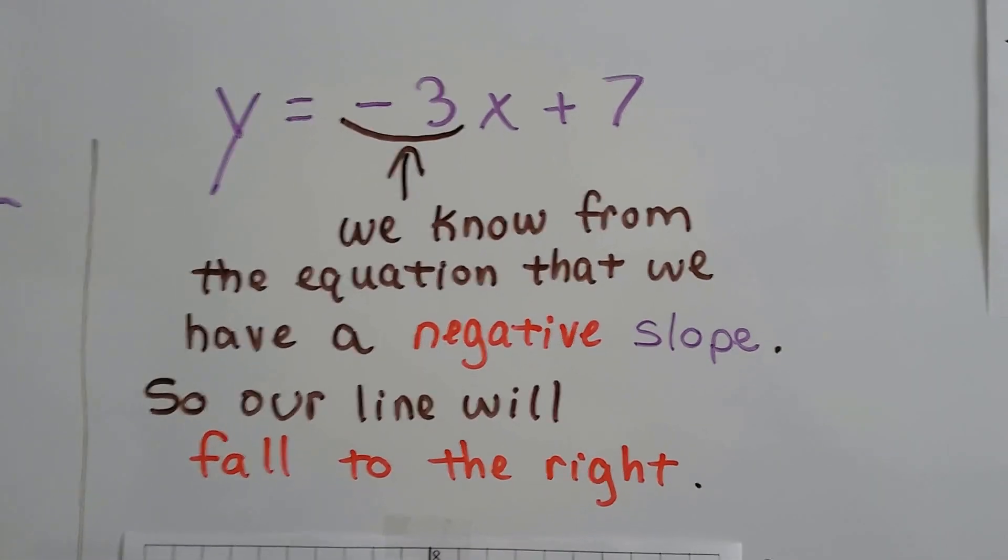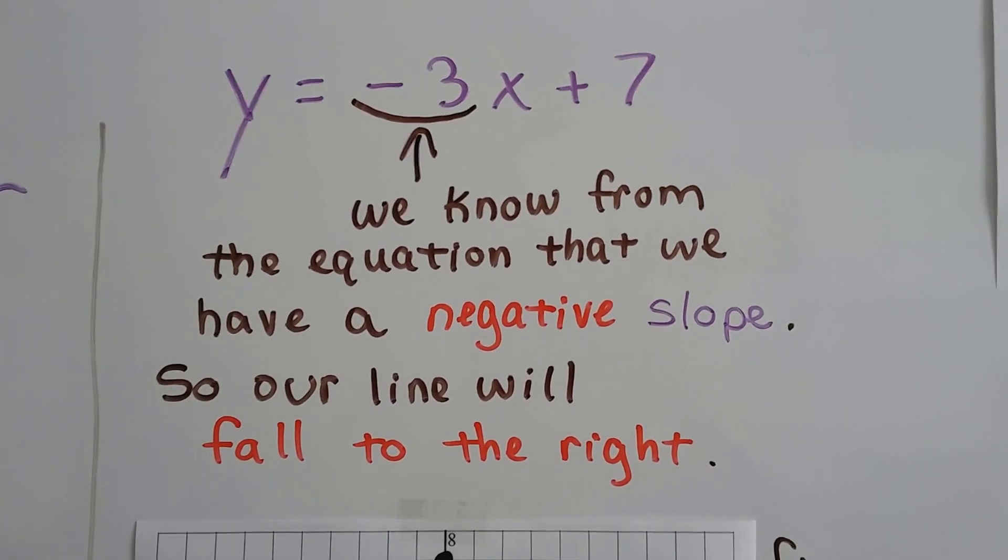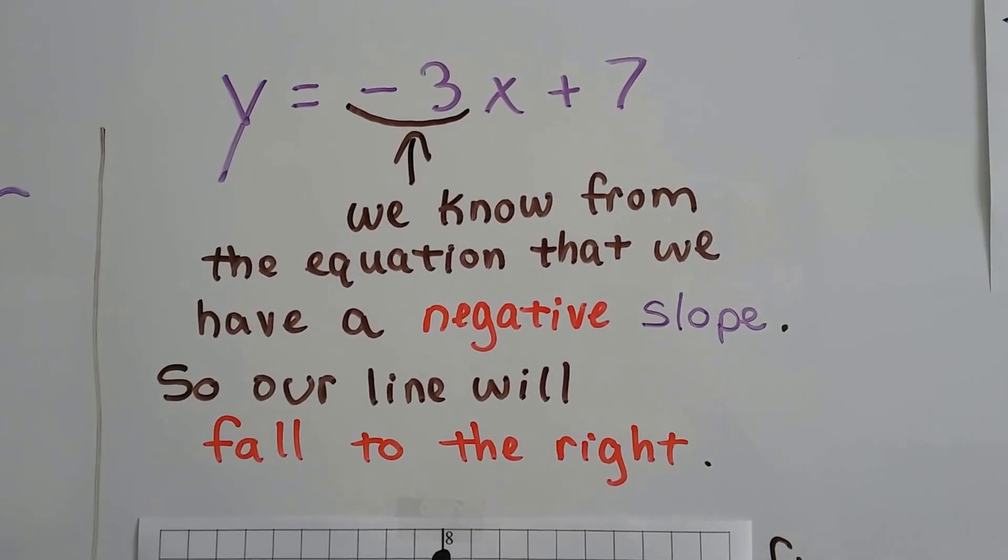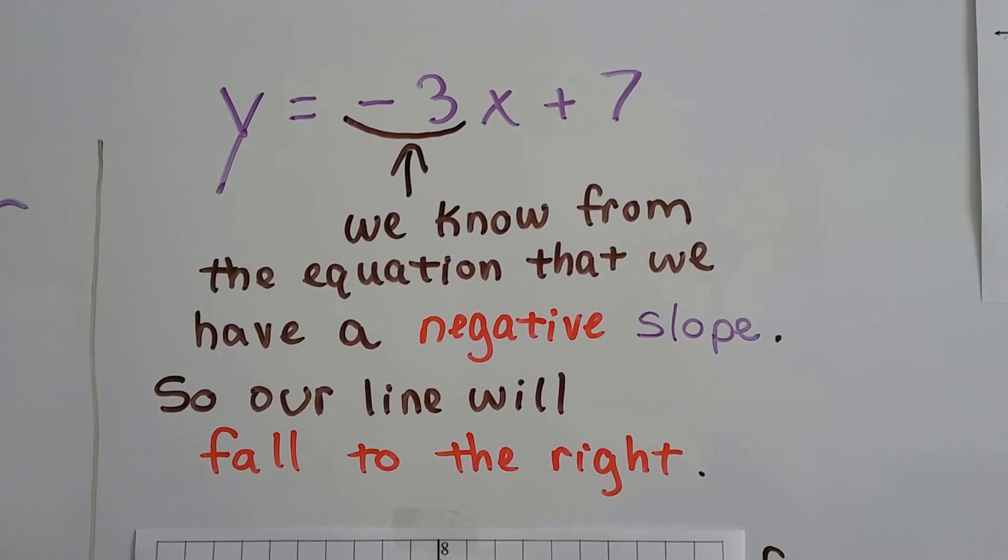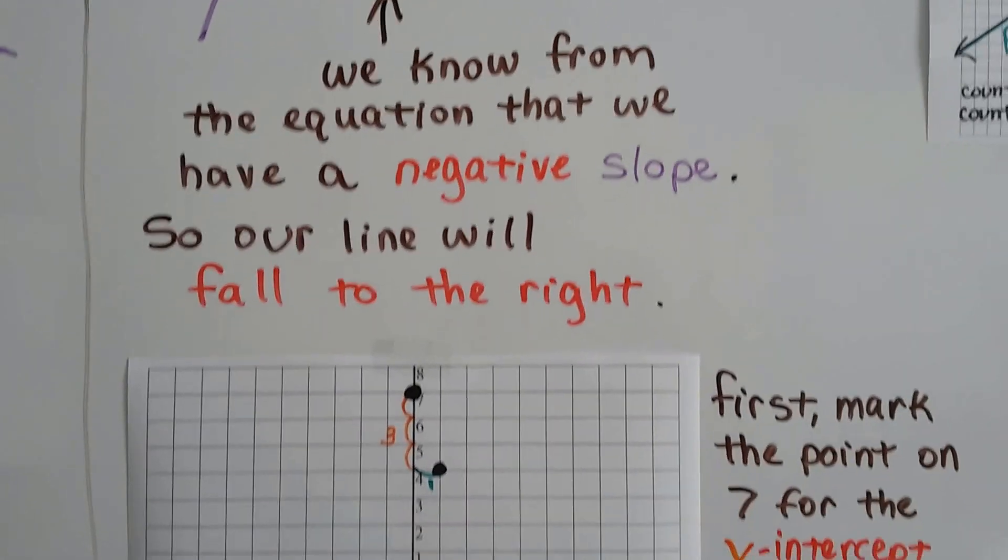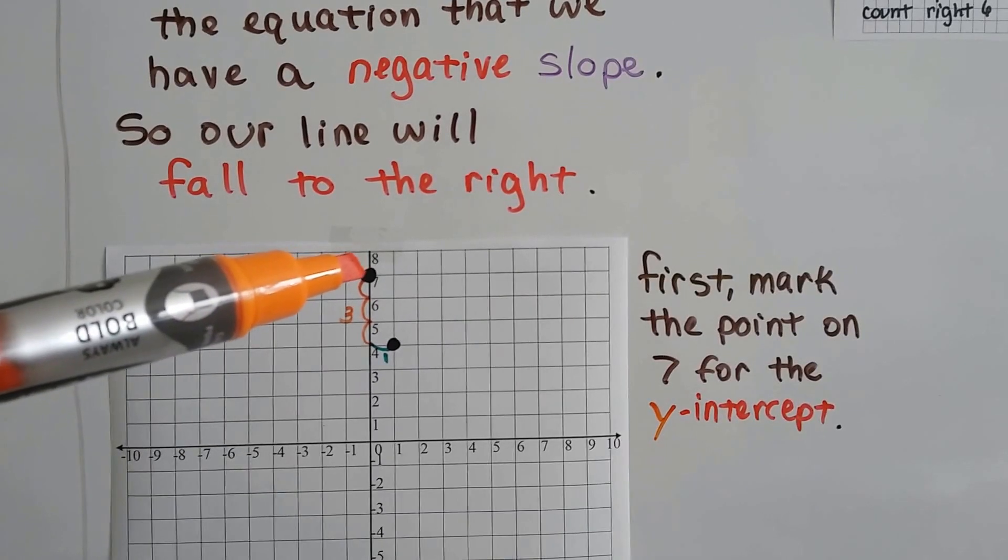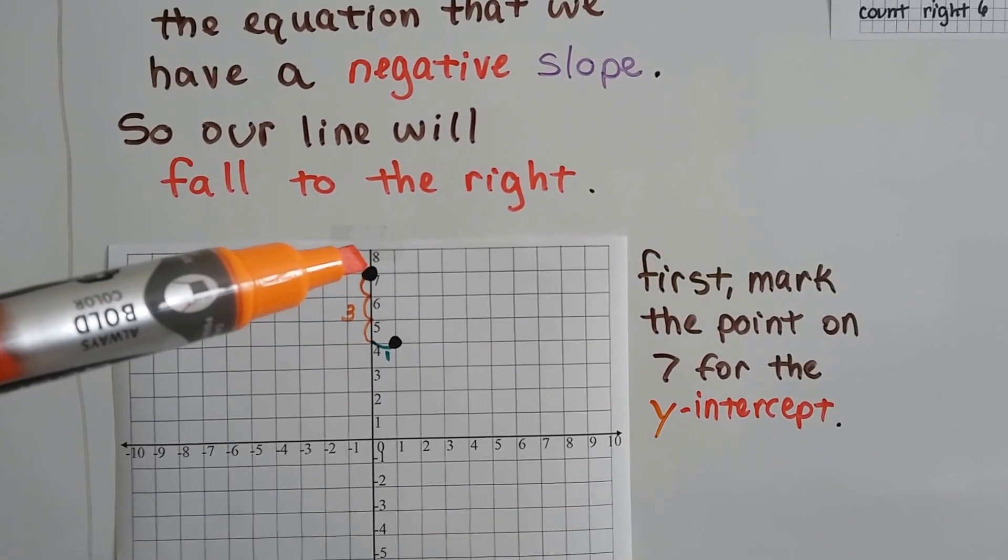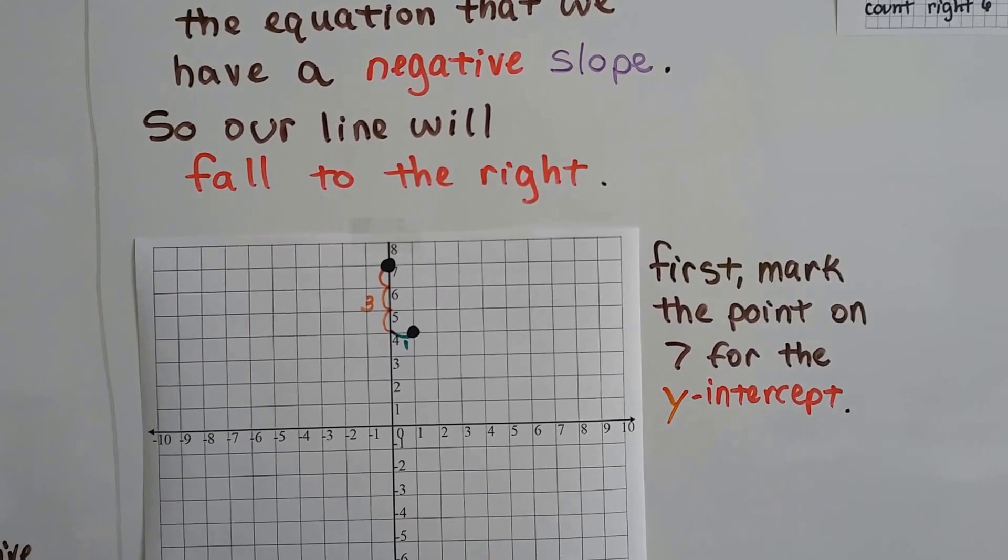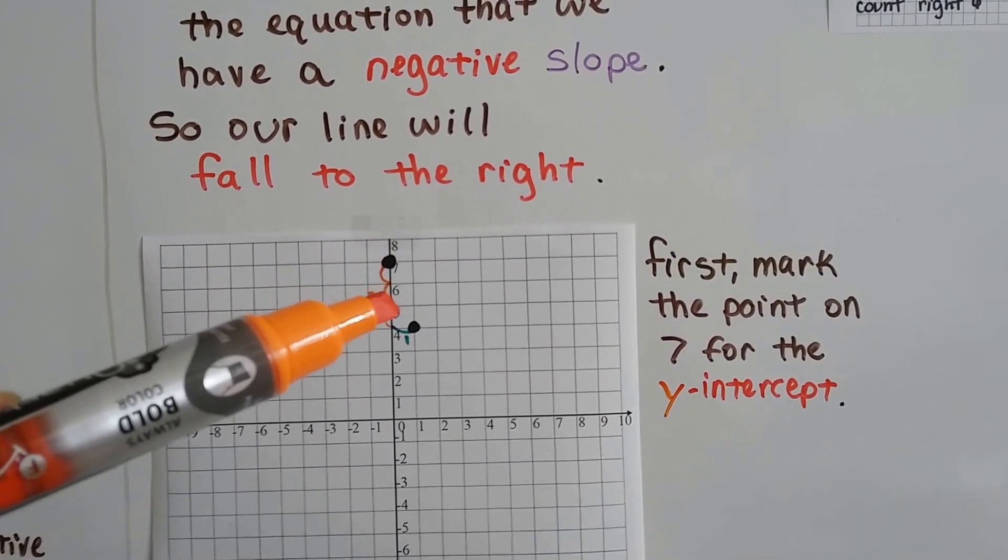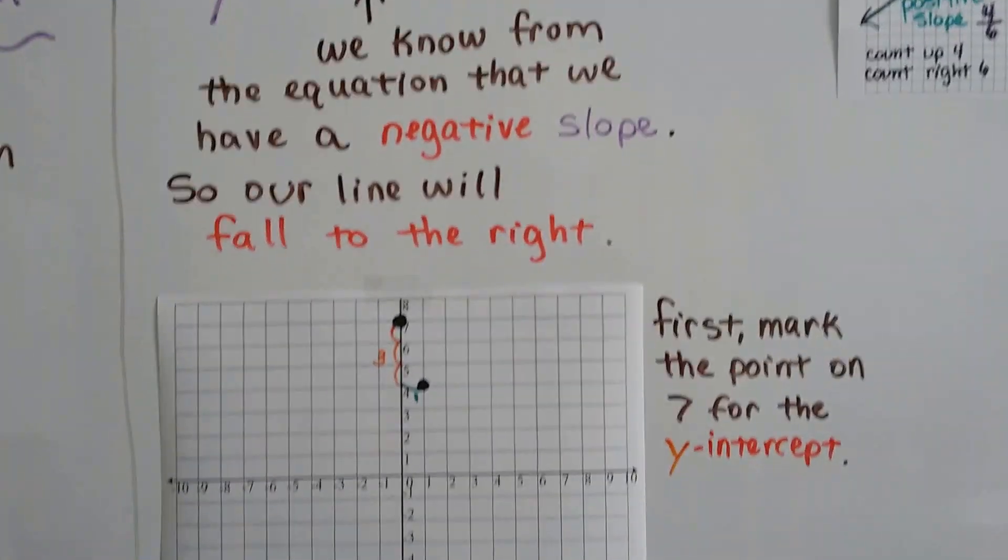We've got y equals negative 3x plus 7. We know from the equation that we have a negative slope because it's negative 3. So our line's gonna fall to the right. We already know what direction it's gonna go. So the first thing we do is we mark the point here at 7 on the y-axis. That's the y-intercept, the 7. We count down three spaces, 1, 2, 3, because we have a negative 3.